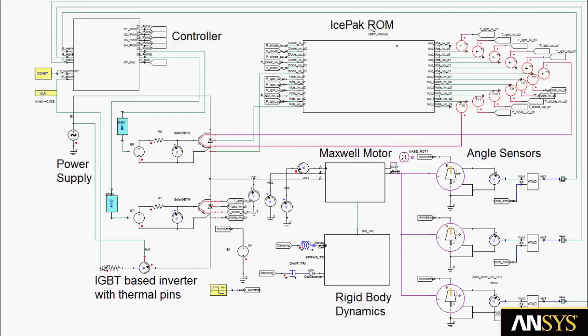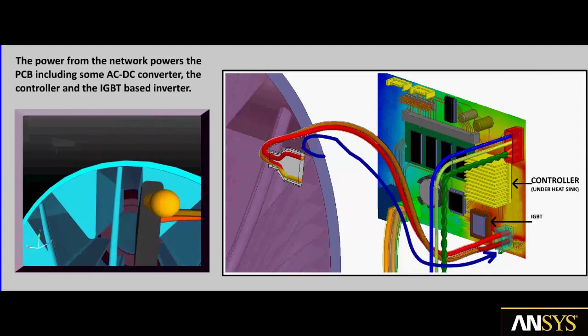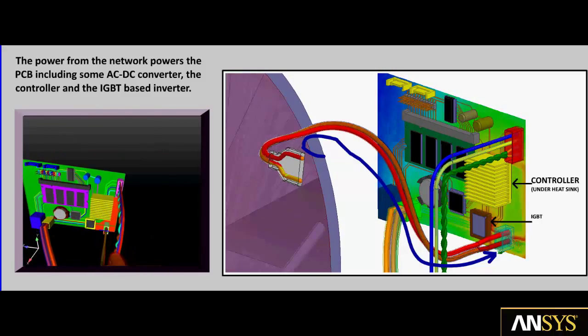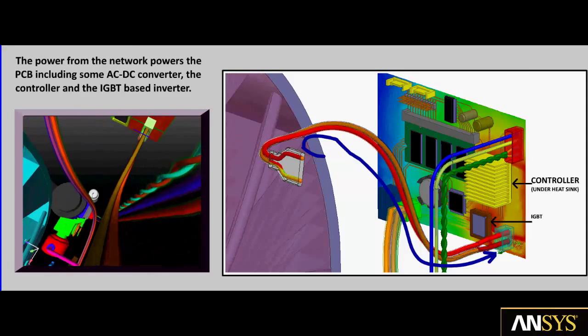We first consider the power supply in the ANSYS Simplora system simulation. The power is supplied to the IGBT inverter modules and the controller. The power from the network powers the printed circuit board including an AC to DC converter, the controller, and an IGBT-based inverter.